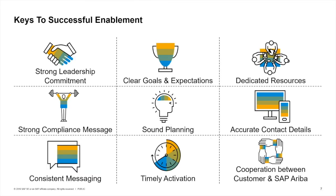In addition to the three elements that have been covered, there are several other important things to consider when executing a supplier enablement program. The first is strong leadership commitment. For a transformation program to be successful, your organization needs top-down support from its leaders. This support will increase compliance with not only your suppliers, but also with your internal teams.